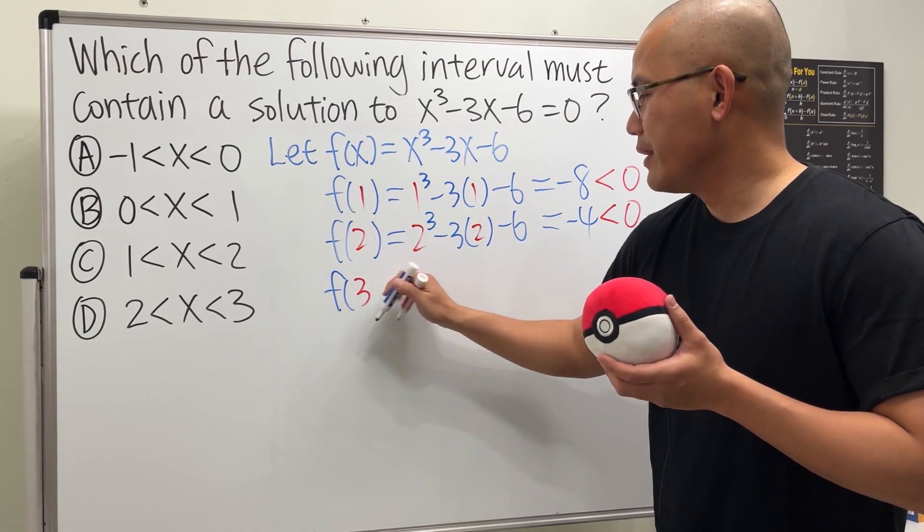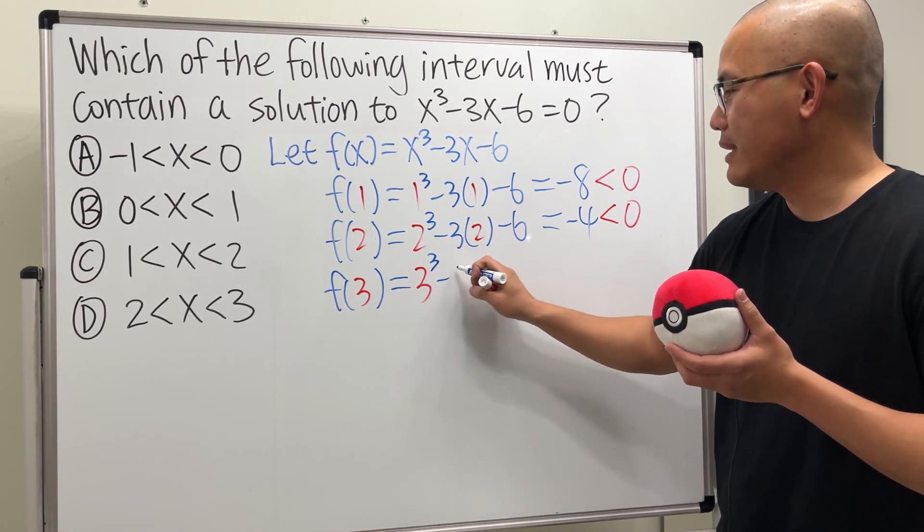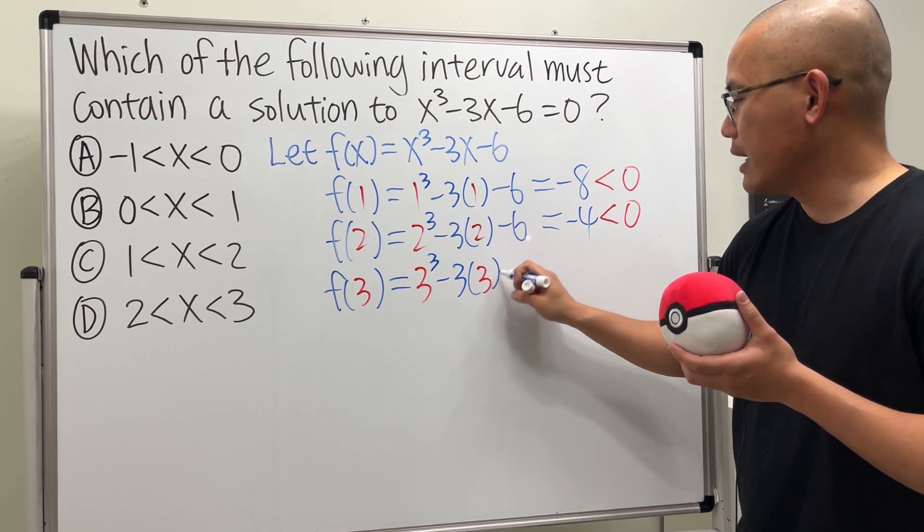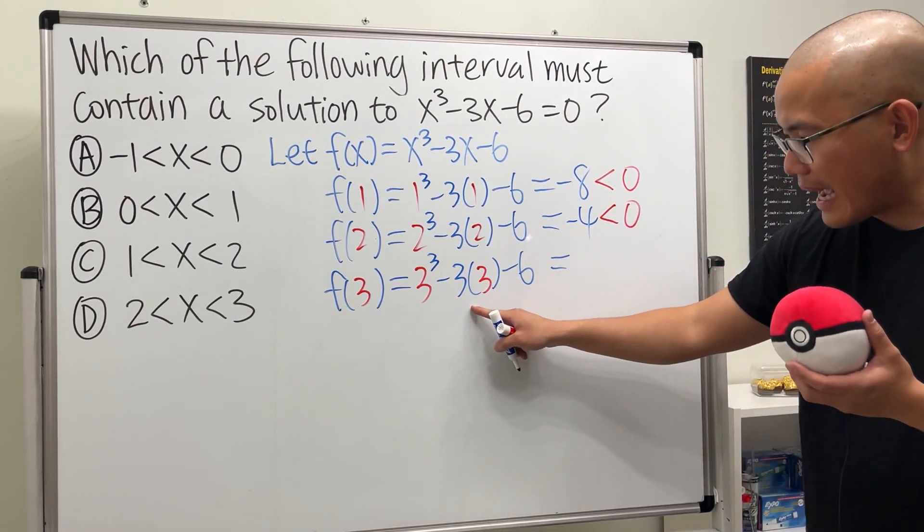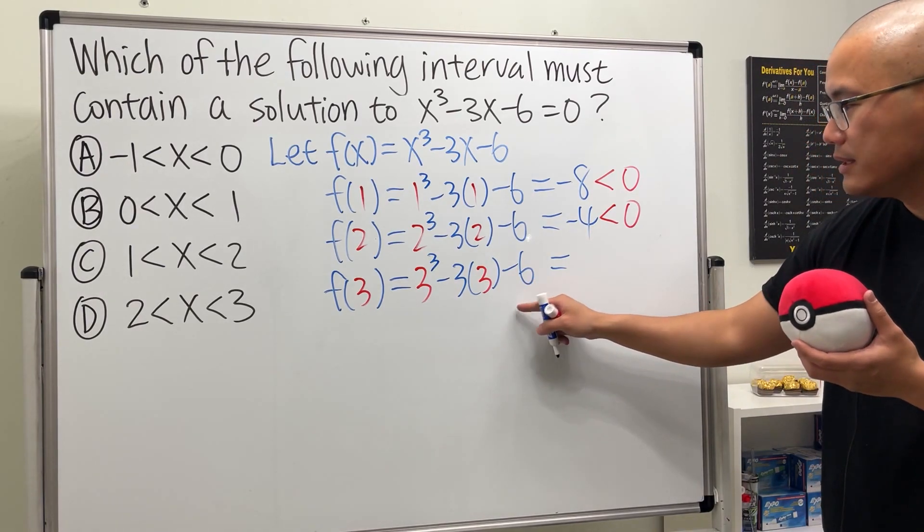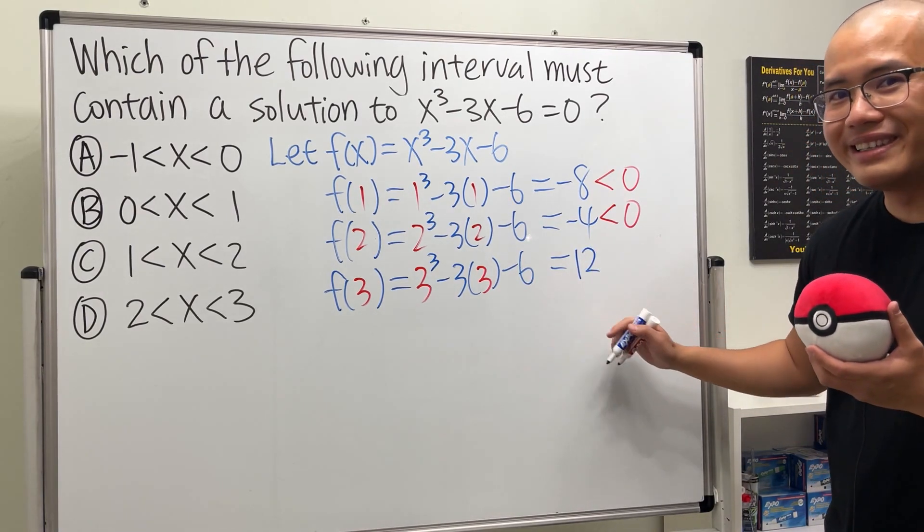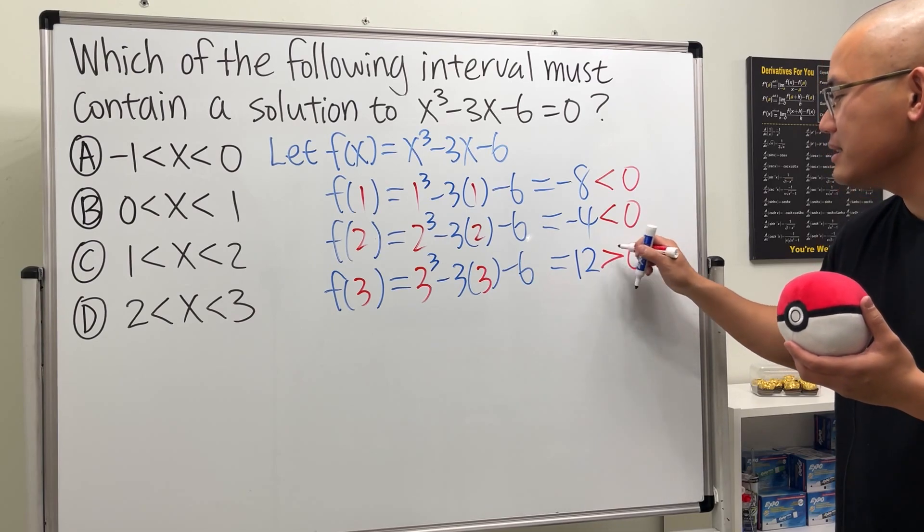f(3) is equal to 3 to the third power minus 3 times 3 and then minus 6. This is 27 minus 9, which is 18, and then minus 6 is 12. And this right here, ladies and gentlemen, is positive.